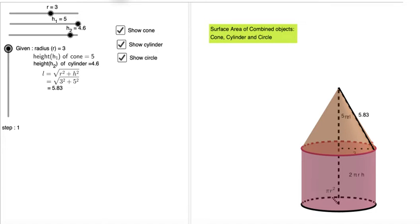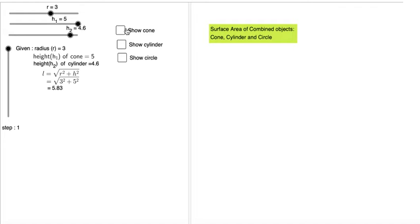Surface area of combined object. Here our combined object is cone, cylinder and circle. So we have three objects. Let me start from scratch and show the cone. So this is the cone.